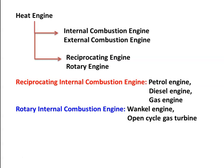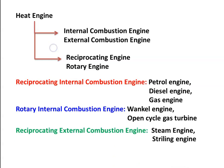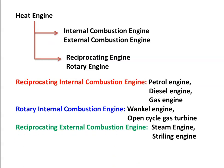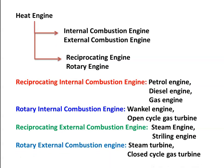The gas turbine and the Wankel engine are both rotating machines. Reciprocating external combustion engines include the steam engine and the Stirling engine. Steam engines are nowadays not commonly used — earlier they were used in trains but no longer at a larger scale. The rotary external combustion engine includes the steam turbine and the closed-cycle gas turbine. So the steam turbine is a rotating type of machine.